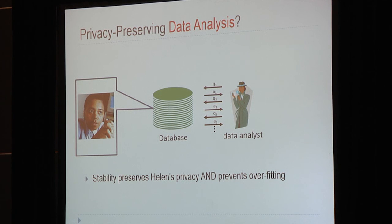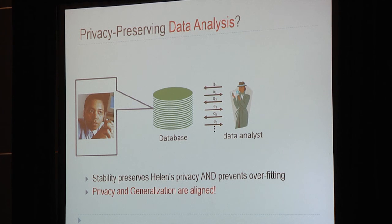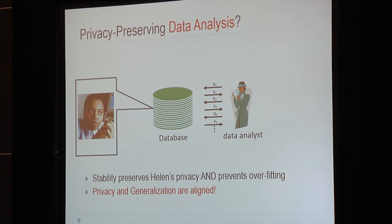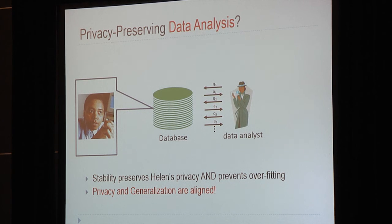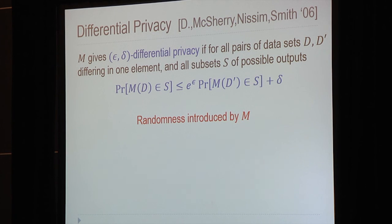Everybody always talks about the tension between privacy and utility. But stability — which is the core of our definition of privacy — is also crucial to preventing overfitting and permitting generalizability. So privacy and generalization are actually aligned.